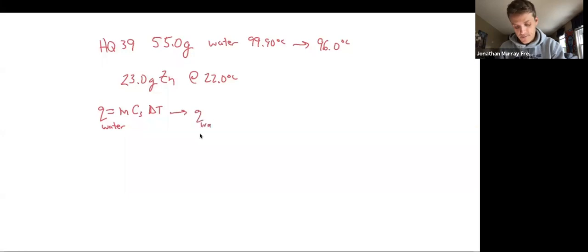So Q for the water—I've got 55 grams of water. The specific heat of water is 4.184 joules per gram degrees Celsius times my temperature change of water.